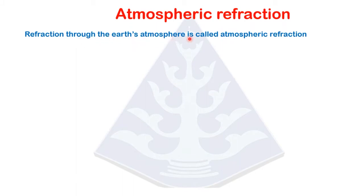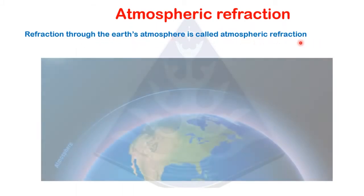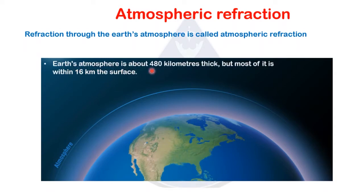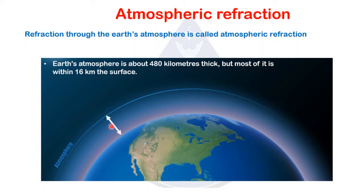Refraction through the earth's atmosphere is called atmospheric refraction. Here you can see the atmosphere around the earth. The earth's atmosphere is about 480 kilometers thick, but most of it is within 16 kilometers of the surface. As we go above the earth, the density will decrease.